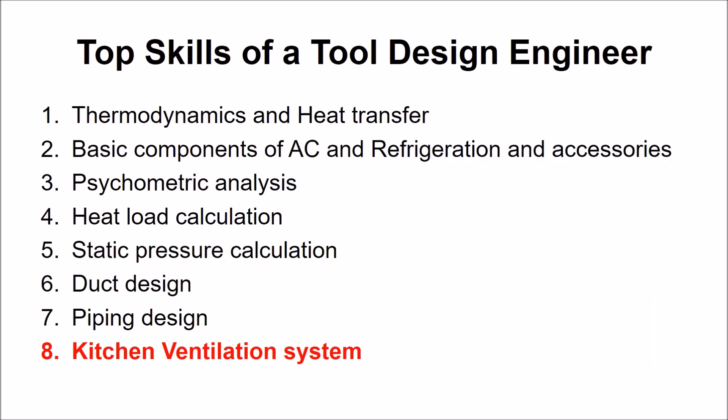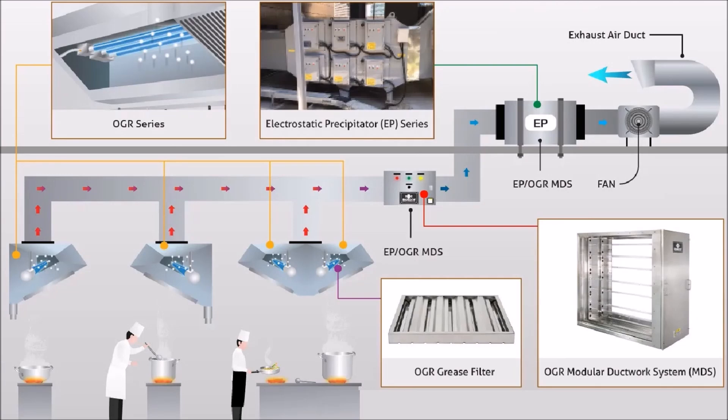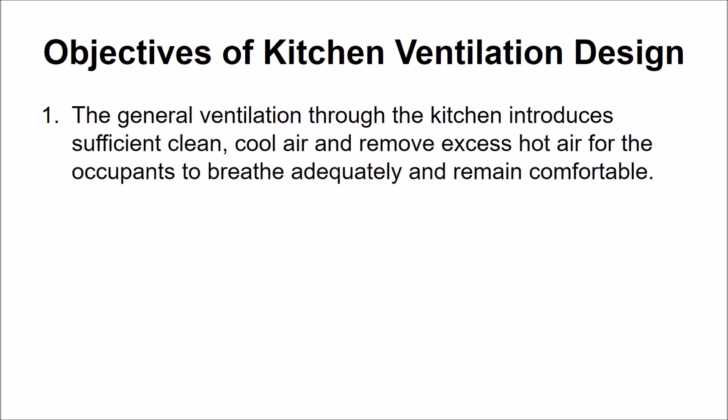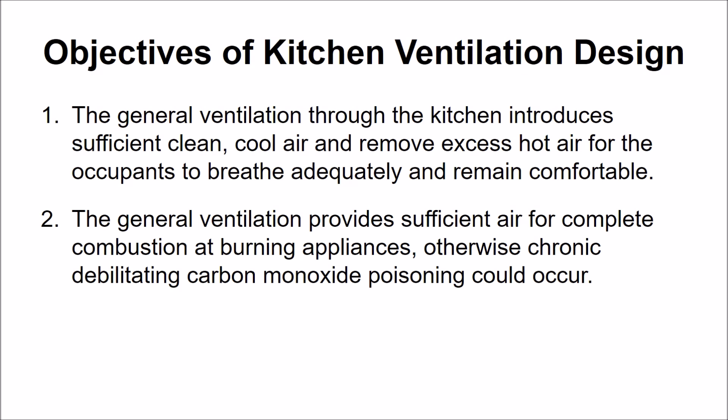Eighth is kitchen ventilation systems. Ventilation is the single most important factor in the design, construction, and operation of commercial kitchens. Without adequate ventilation and ample supply of clean makeup air, no kitchen will operate efficiently. While designing the ventilation system of a commercial kitchen, an HVAC designer needs to make sure that general ventilation introduces sufficient clean, cool air and removes excess hot air for occupants to breathe adequately and remain comfortable. The general ventilation also provides sufficient air for complete combustion at burning appliances; otherwise, chronic debilitating carbon monoxide poisoning could occur.